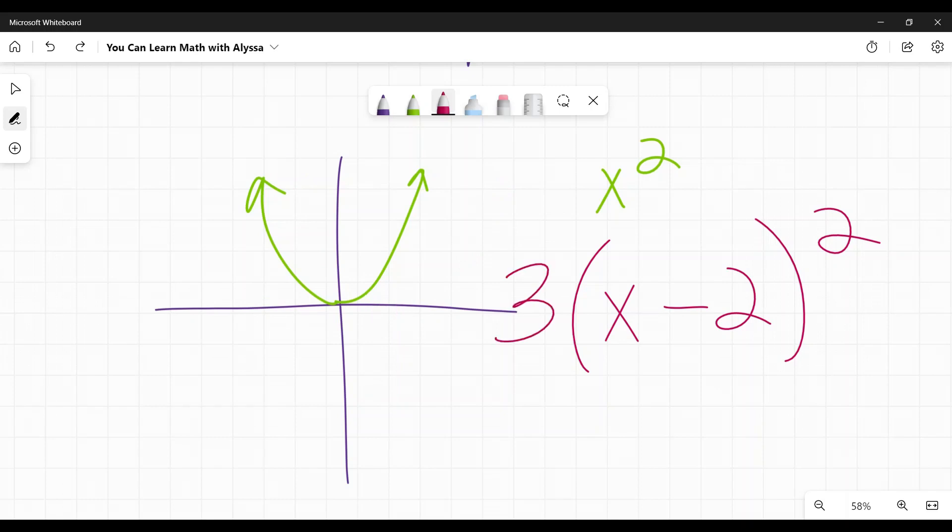So those are the most common. There's a lot of them. If you put a negative, it flips it. If you put a number that's greater than one, it makes it more steep. If you put a fraction, it makes it wider. Those are the most common ones that you see.